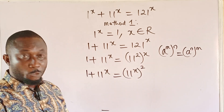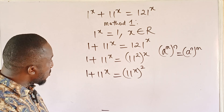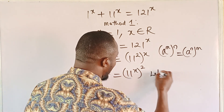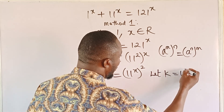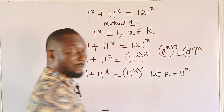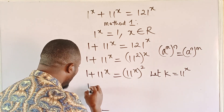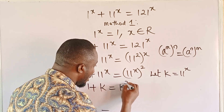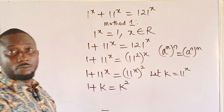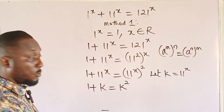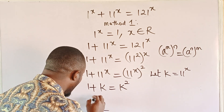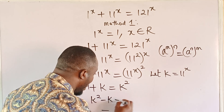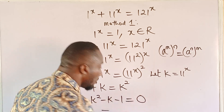You can see the pattern of a quadratic equation forming here. So if we let k equal to 11^x, we shall then have 1 plus k equal to k squared. Rearranging into standard form, it's going to be k² minus k minus 1 equal to 0.